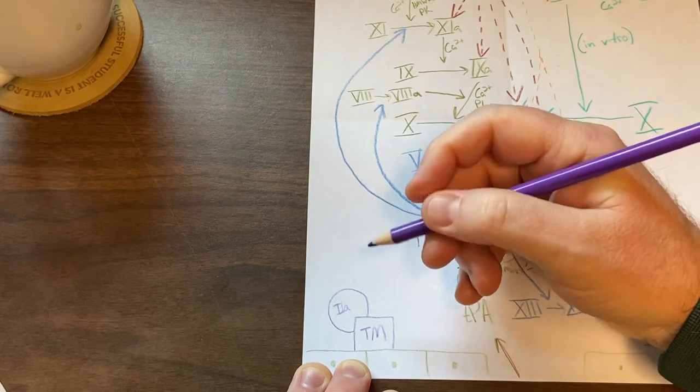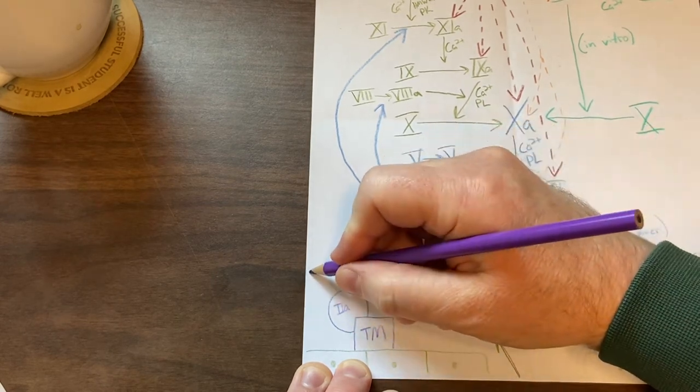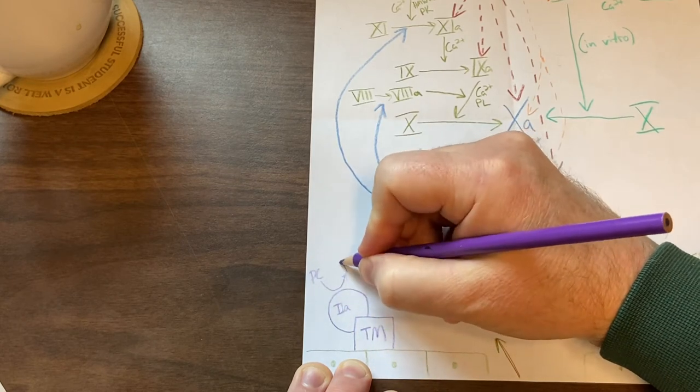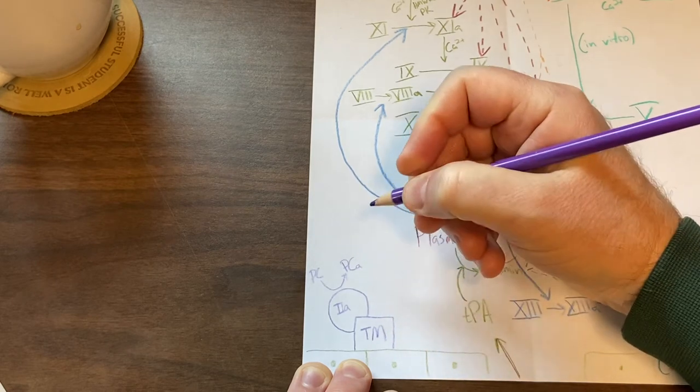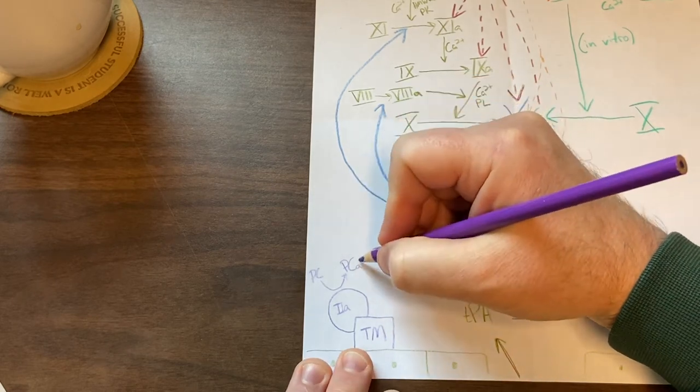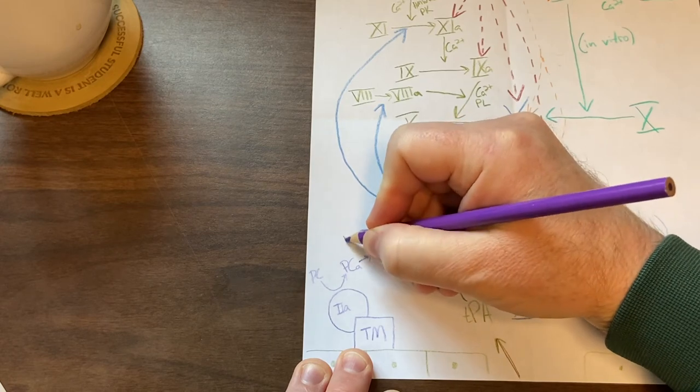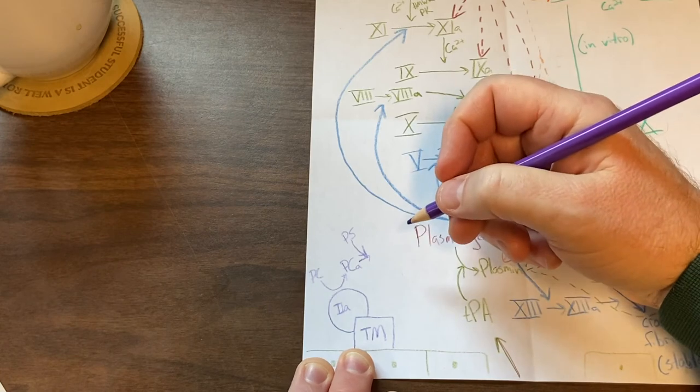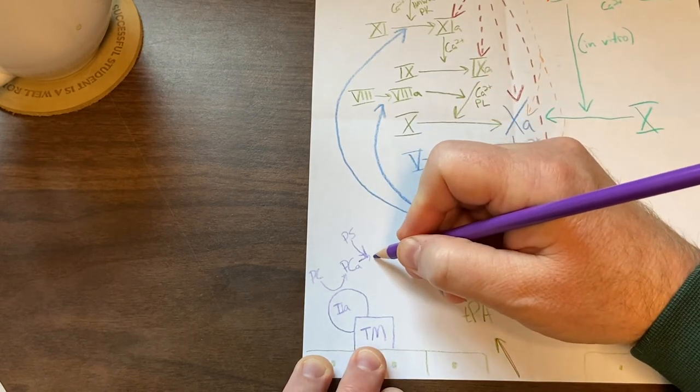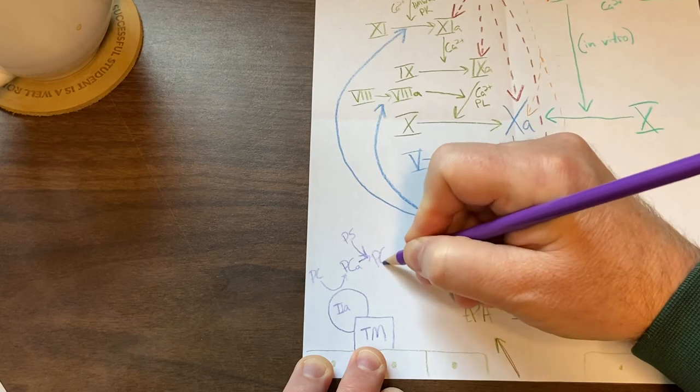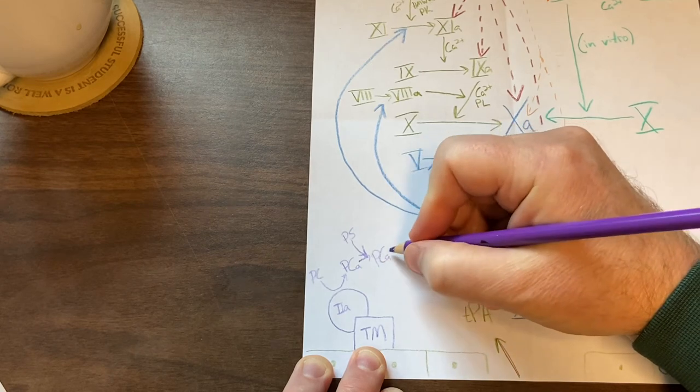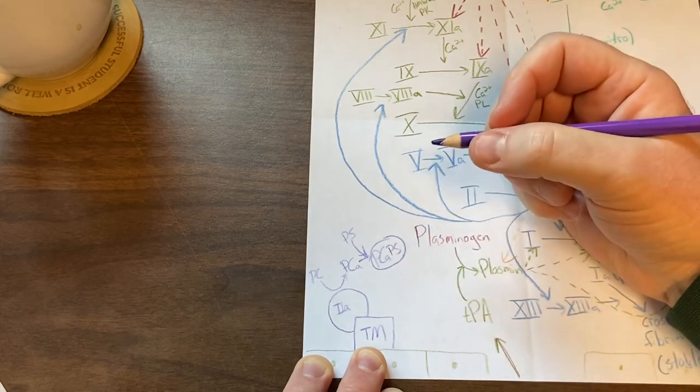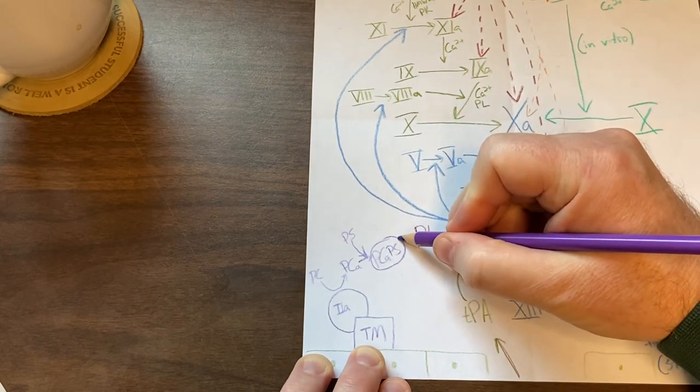Then we have it binding to thrombin, so I'm gonna put the thrombin right here. Thrombin is just 2a, right? And protein C gets activated by that complex and it gets activated to activated protein C, and then it complexes with protein S. So I'll draw that in here.